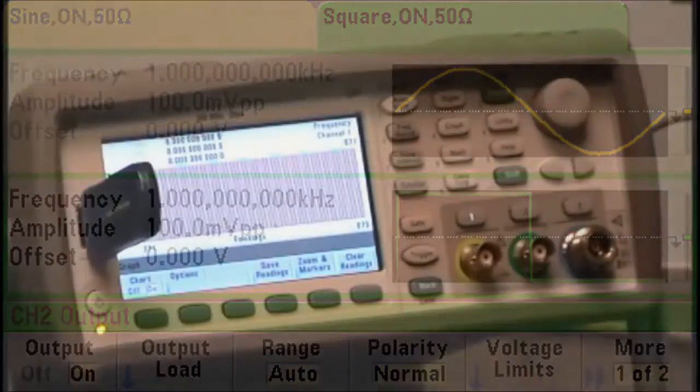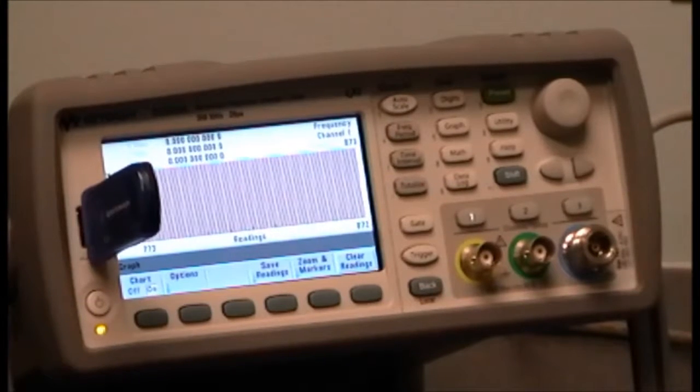Okay, next we'll do the 53230 counter screen save. Now to do this one it's similar but a little different because the button layout on the counter is different.